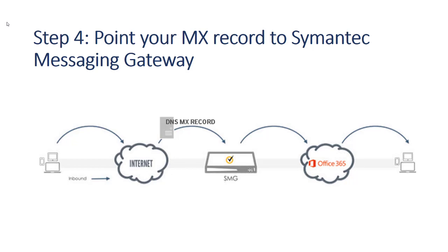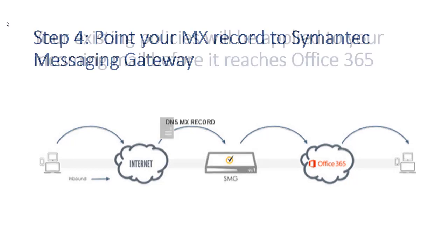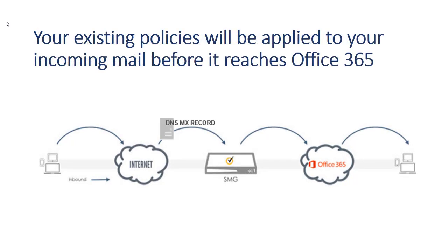Last step: Check your DNS settings to make sure your MX record points to Semantic Messaging Gateway. Your incoming email is now directed to Semantic Messaging Gateway, which applies your existing policies and then sends the filtered mail to Office 365 for delivery.